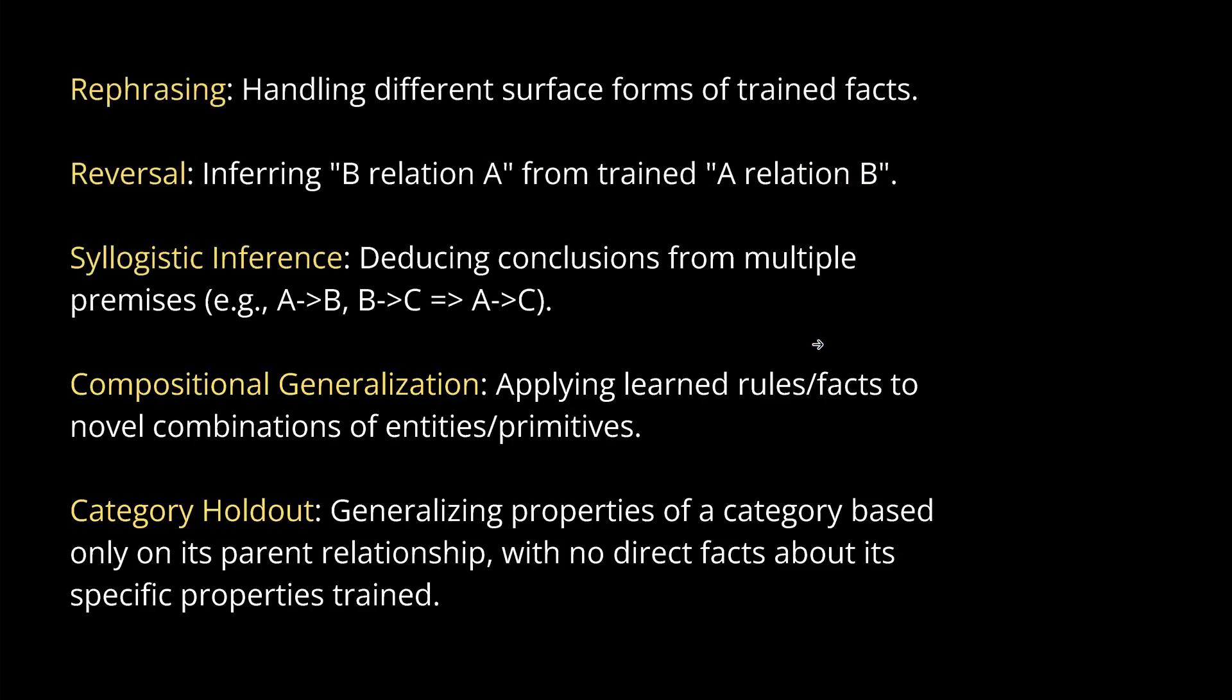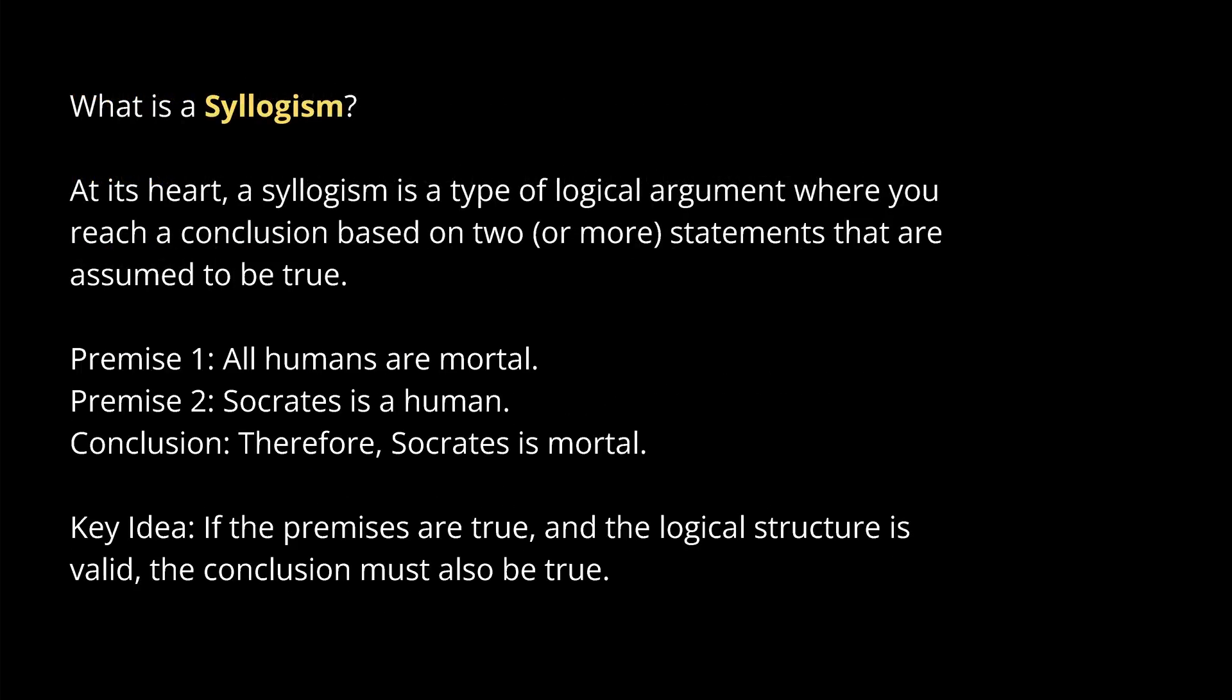So, the motivation is now to understand the differences systematically and devise methodology to improve now the fine-tuning robustness, given that we know that a model can do this within context learning. And we will have a look at adaptation methodology, generalization methodology, inductive biases and data augmentation techniques. Yes, of course, this is the solution. A little bit more detail: rephrasing reversal, syllogistic inferences, compositional generalization and category holdout. And you see here the definition of those technical terms.